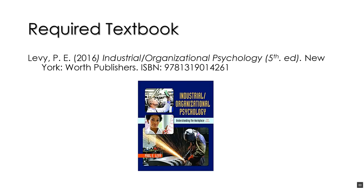So first off, let's go over the syllabus — you have a copy of it online, so you could take a look at it and I would encourage you to do so. Here we go with the required text. For every college class, I would encourage you to get the textbook. We're using the fifth edition — I know the sixth just came out, so the fifth edition should be a little bit cheaper. You can get that through the college bookstore online or any other book-selling source. I noticed that you could rent it for 23 bucks on Amazon, so that's one option you have.